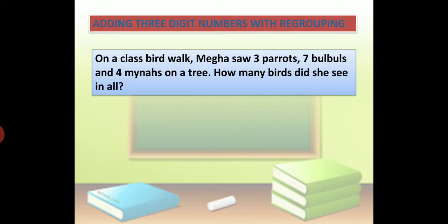Today in this topic we have to add 3 one-digit numbers with regrouping. You can see here Megha saw 3 parrots, 7 bulbuls, and 4 mynahs. So we have to add 3 plus 7 plus 4, and we have to find the sum.